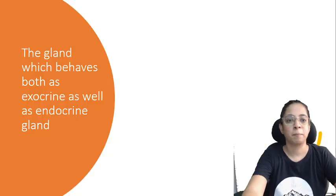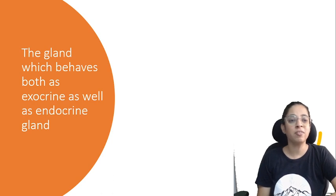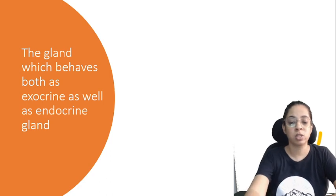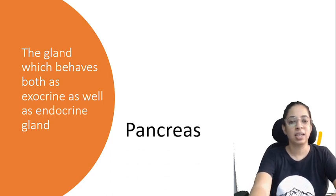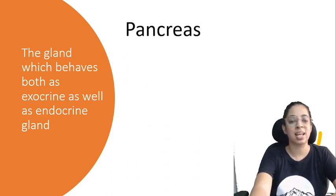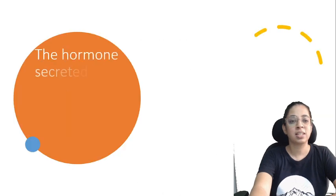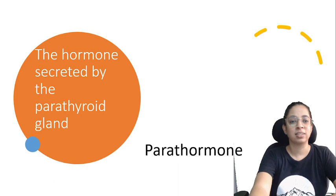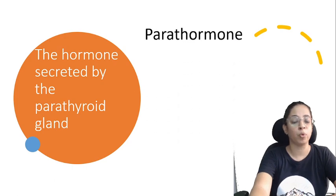The first question is: the gland which behaves both as an exocrine as well as an endocrine gland. The answer is the pancreas. Next, the hormone secreted by the parathyroid gland — that is parathormone.